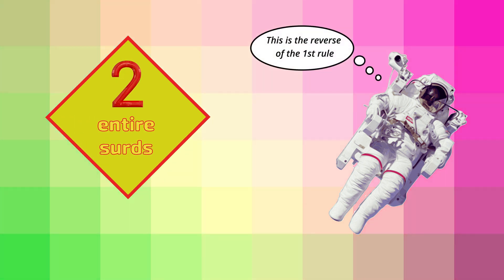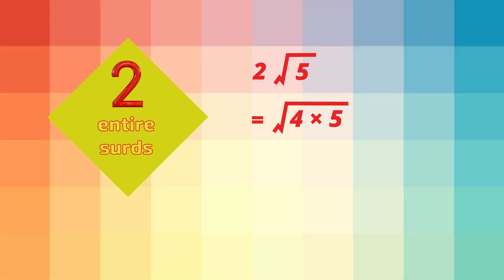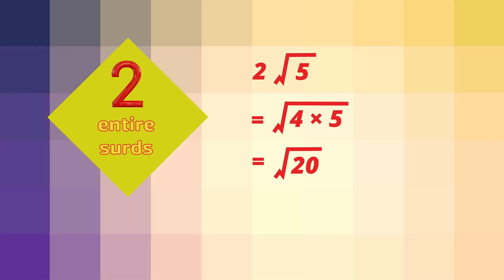Now we'll do the opposite of simplifying — we'll find the entire surd. Let's write 2 root 5 as an entire surd. First we square the 2 at the front: 2 squared is 4 and goes inside the square root symbol. Then we multiply what's inside the square root symbol: that's 4 times 5, which is 20. So 2 root 5 written as an entire surd is root 20.